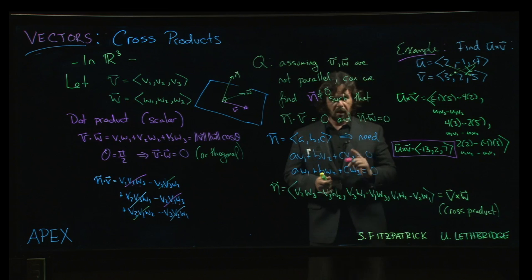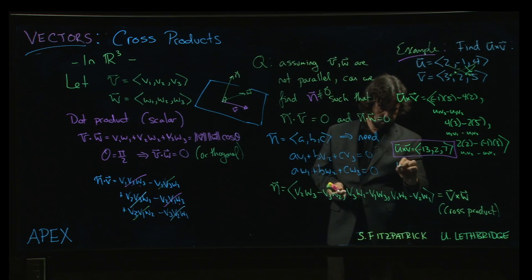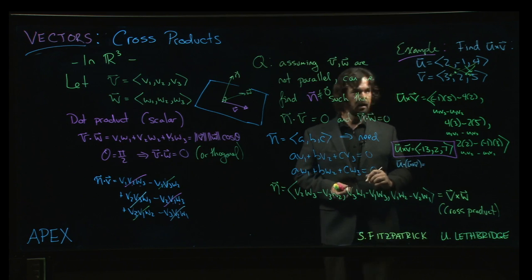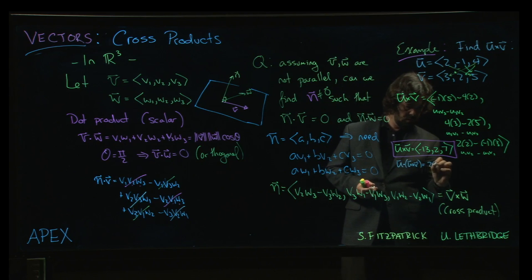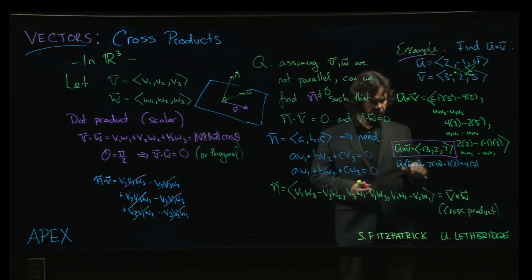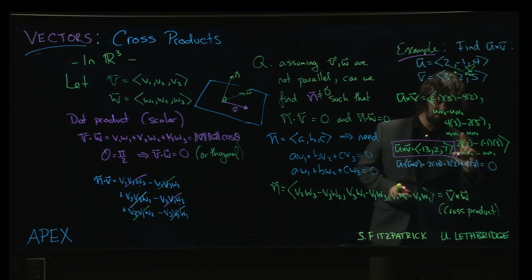And let's check that this actually does the job. Let's make sure that it works as advertised. If I do u dotted with u cross v, I'm going to get 2 times minus 13 minus 1 times 2 plus 4 times 7. So that is minus 26 minus 2 gets me to minus 28 plus 28. I get 0.